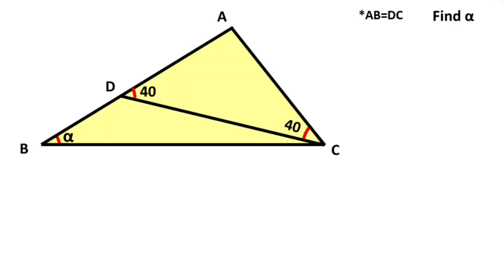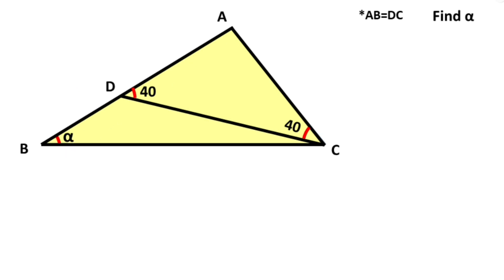In this video we have one triangle where two sides are given as equal. The angles given are 40 degrees and alpha, which is x. I want to represent these two equal sides with x and call the other part y, so this side must be equal to x plus y.